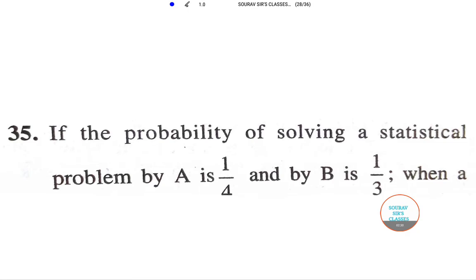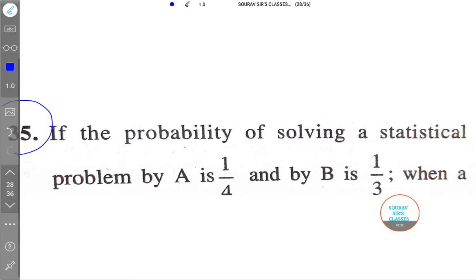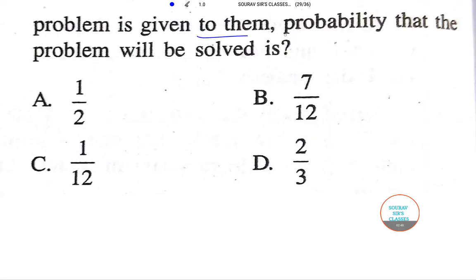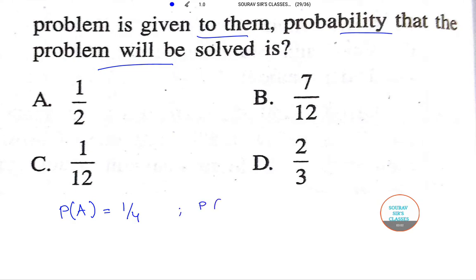The next question, number 35, is a probability sum. It says: if the probability of A solving a statistical problem is 1/4, and the probability of B solving it is 1/3, when the problem is given to both of them, what is the probability that the problem is solved? So probability that A solves it, P(A), is 1/4, and probability that B solves it, P(B), is 1/3.